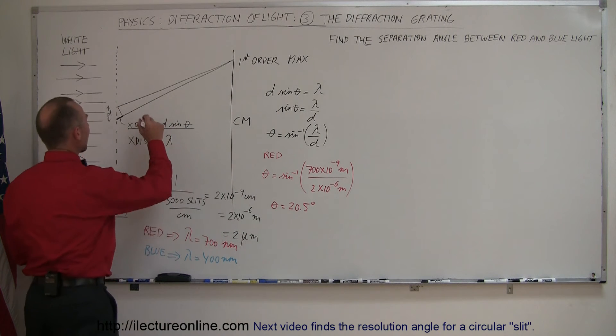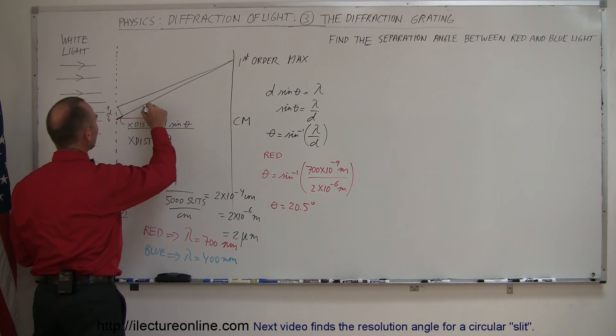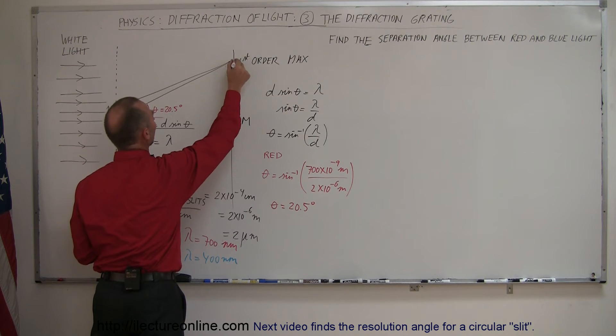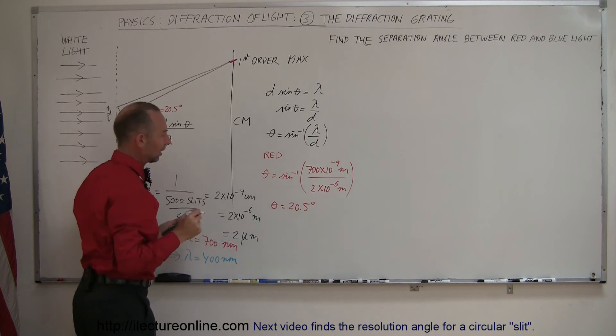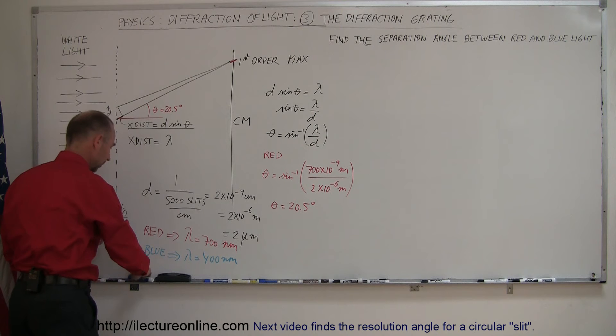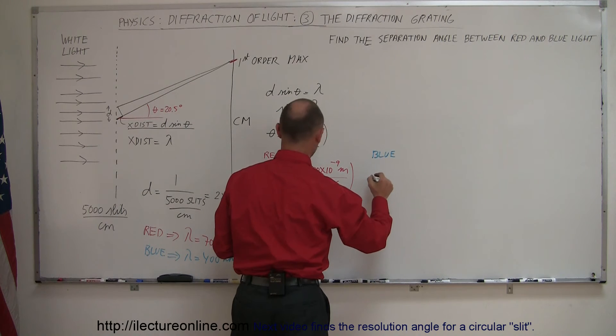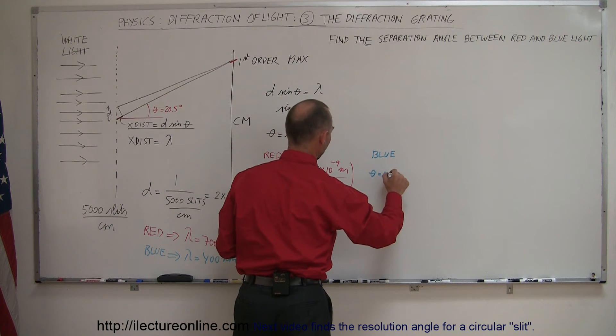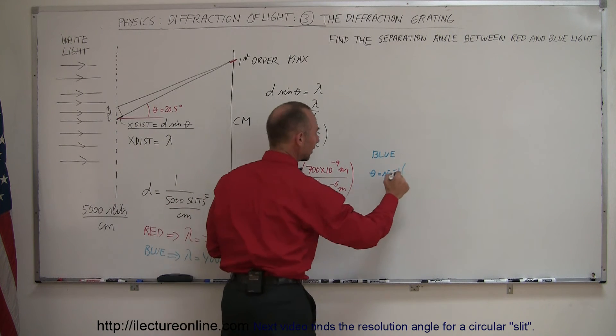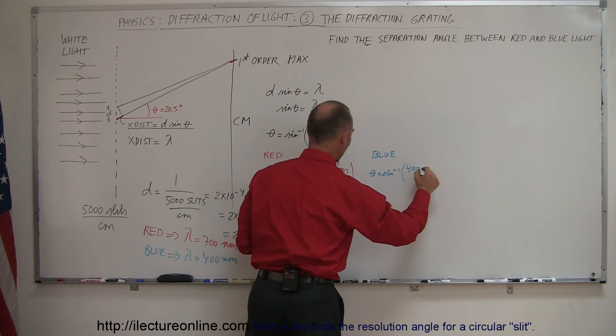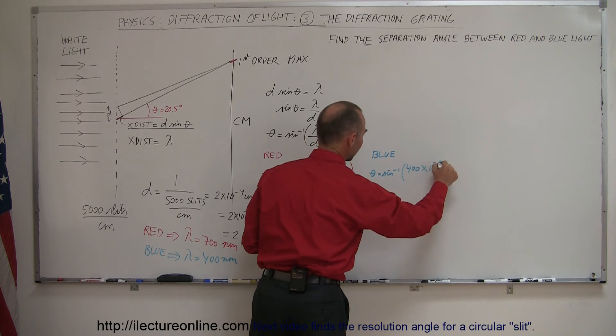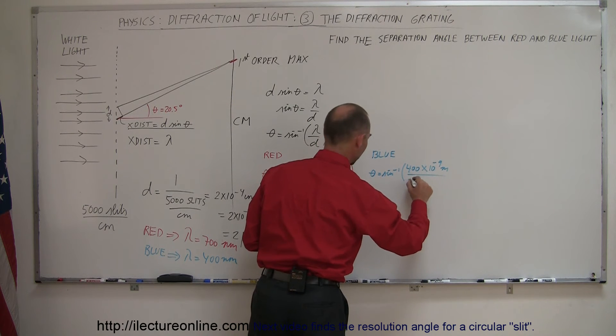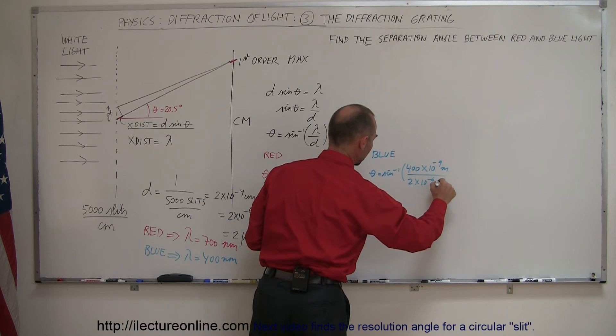So if the angle is 20.5 degrees, that's where you'll see the bright fringe of the red color. Now what will be for blue color? Well for blue, we have theta is equal to the arc sine of 400 nanometers, because the blue light has a wavelength of about 400 nanometers, divided by the distance, 2 times 10 to the minus 6 meters.